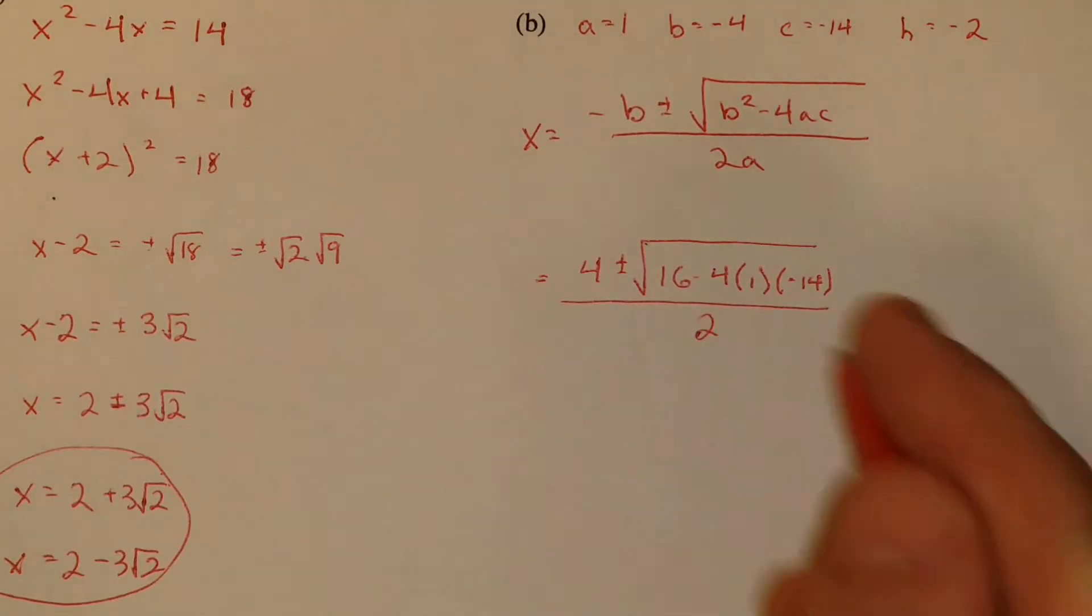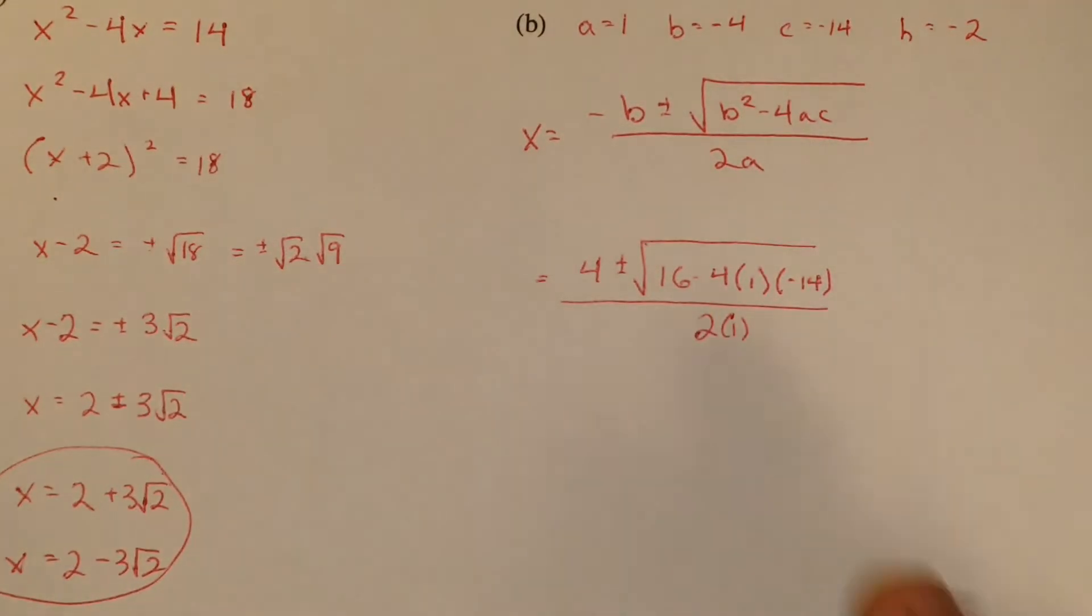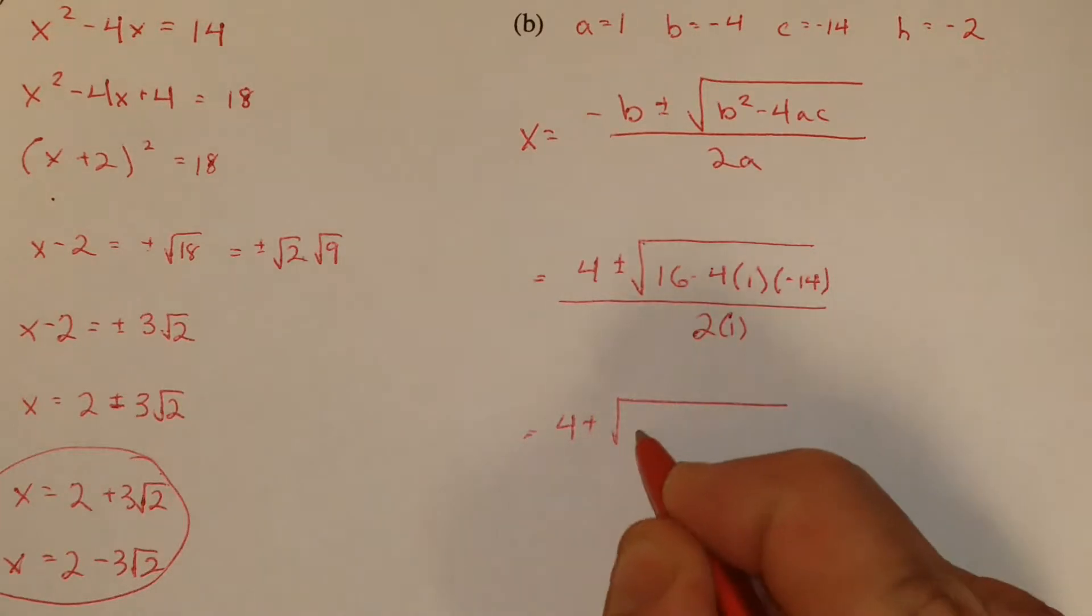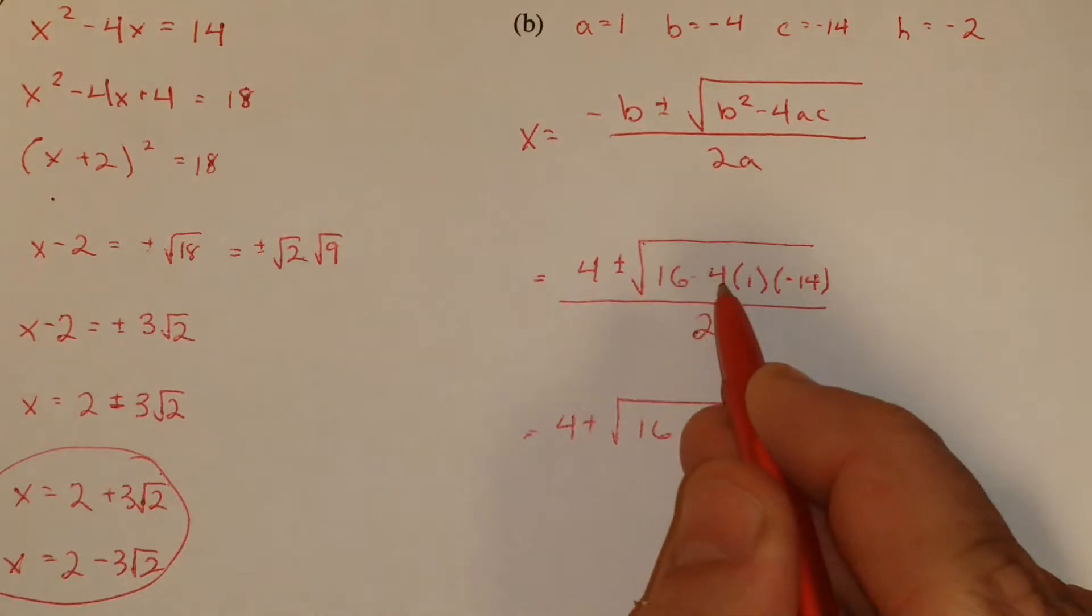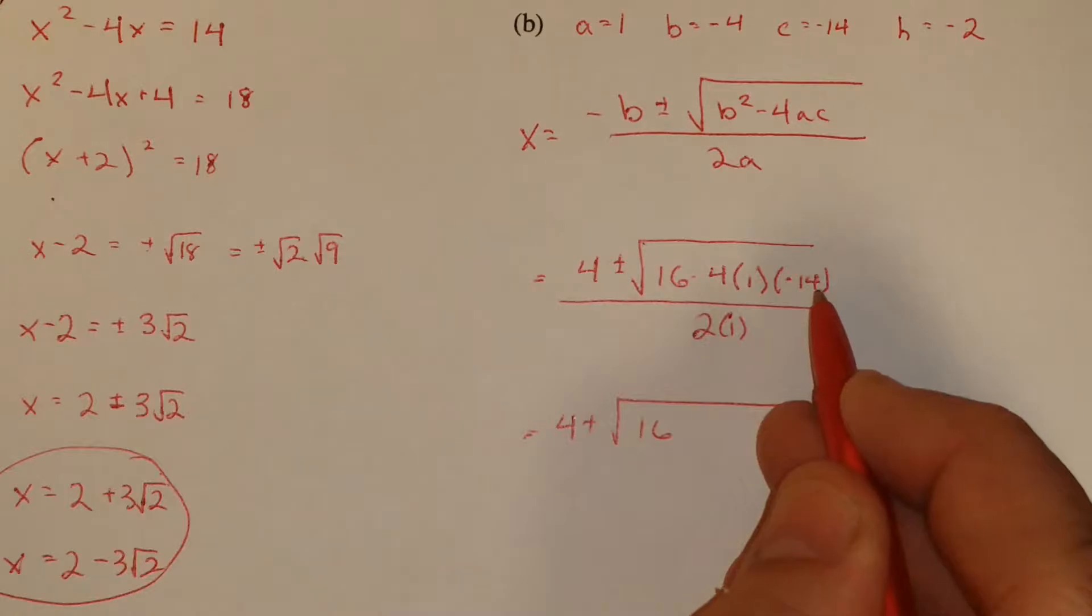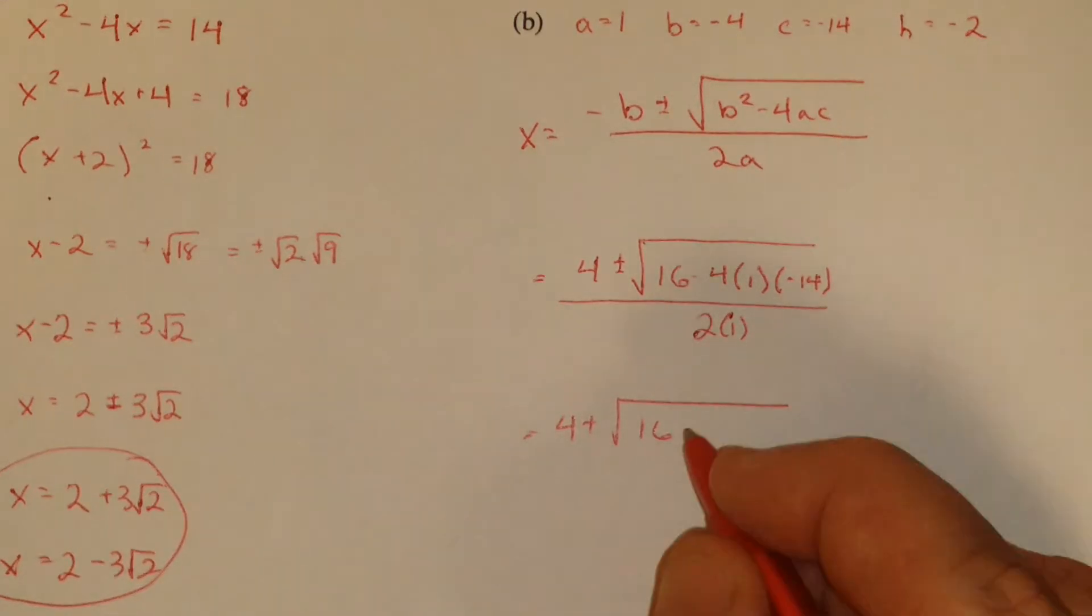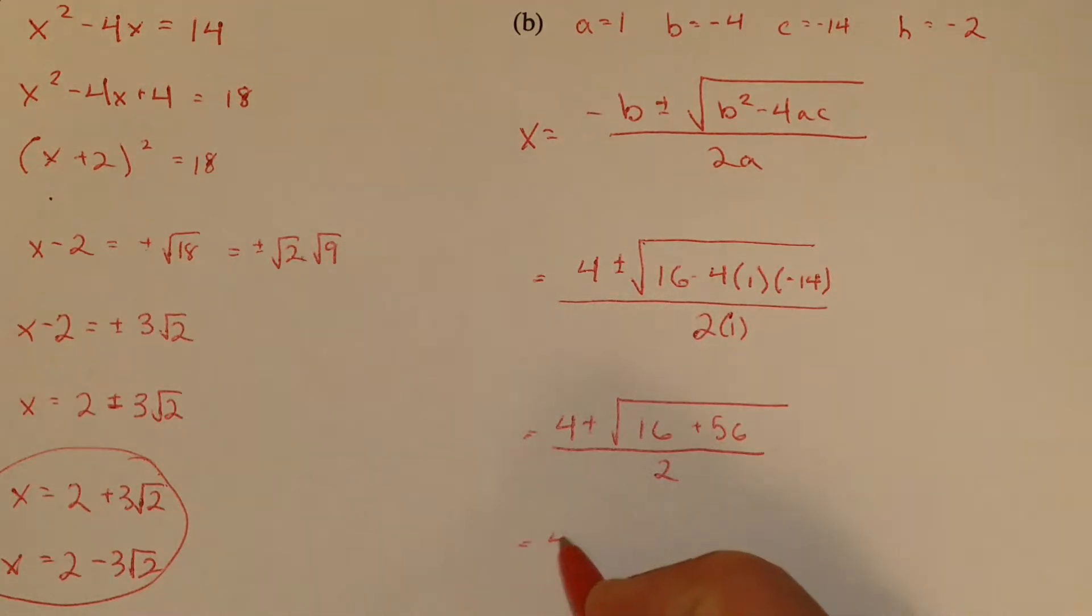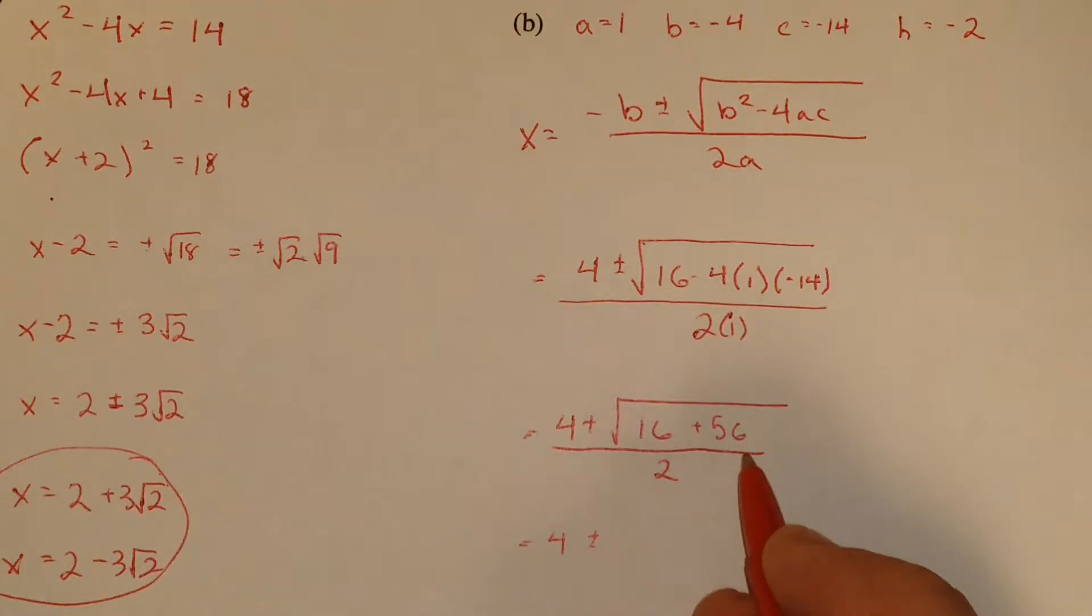So then we have 4 plus or minus. So 16, negative 4 times negative 14 is positive 56. So we're adding 56. So now we have 72 under there.